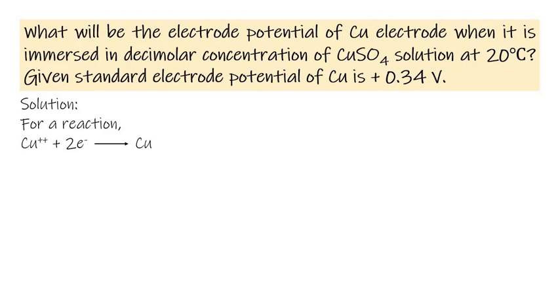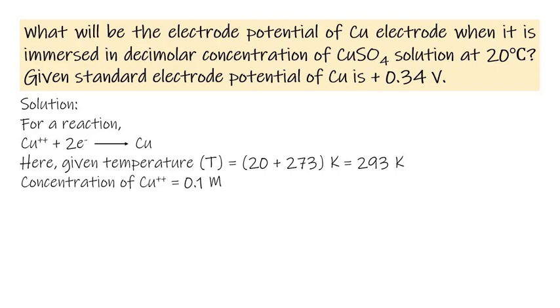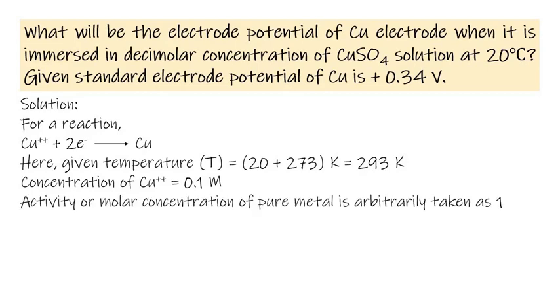Here given temperature T = (20 + 273) K = 293 K. Concentration of Cu²⁺ = 0.1 M. Activity or molar concentration of pure metal is arbitrarily taken as 1.